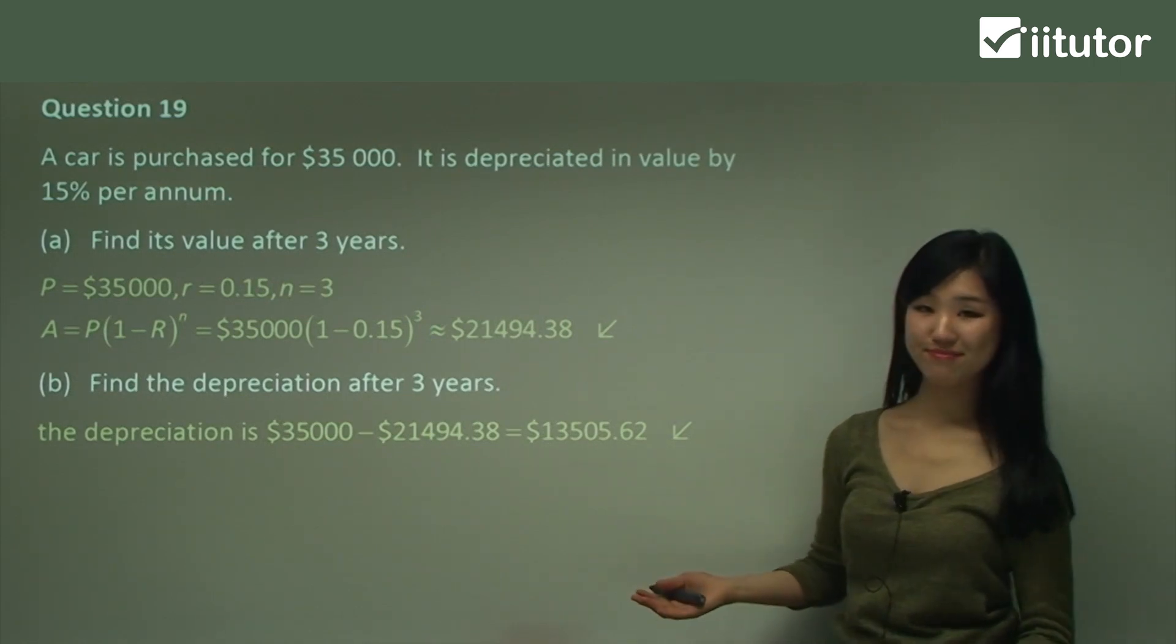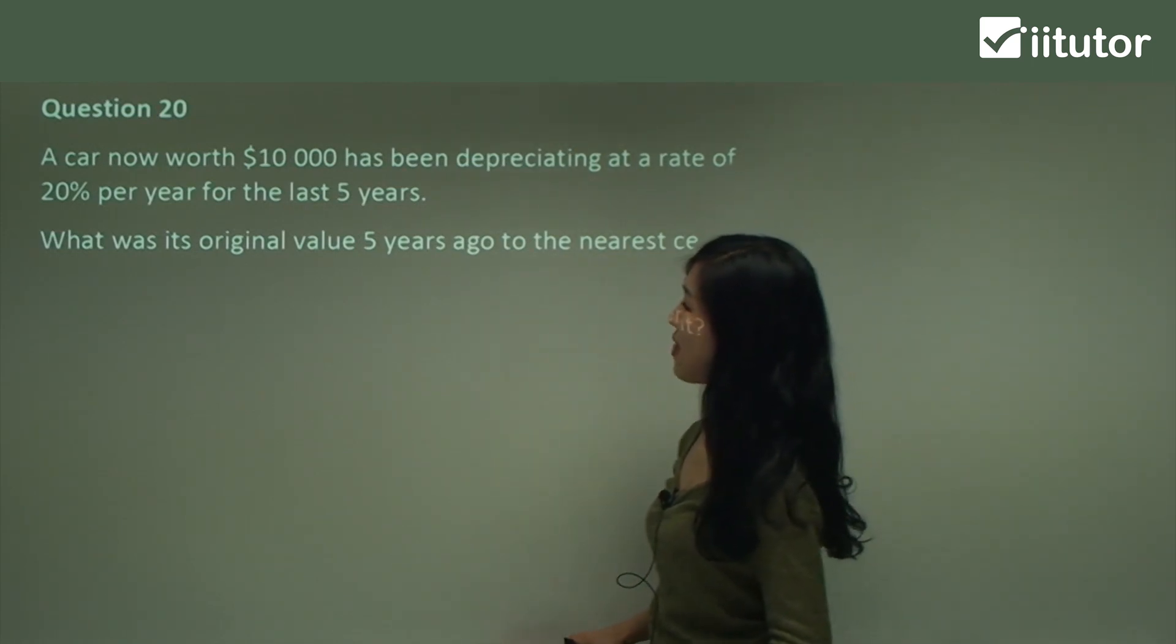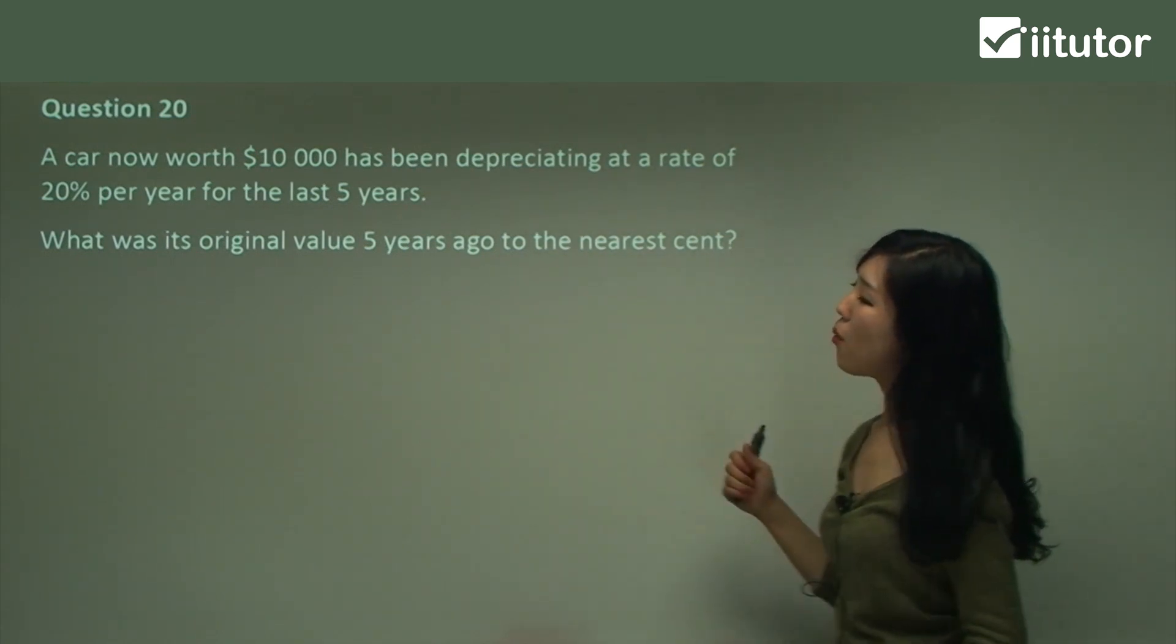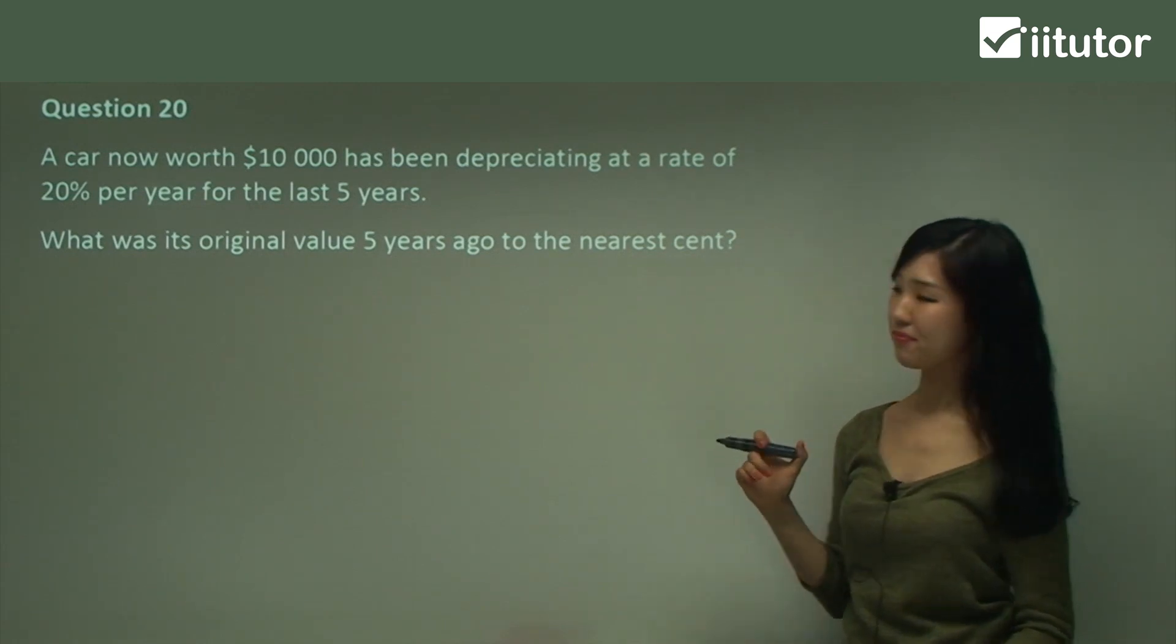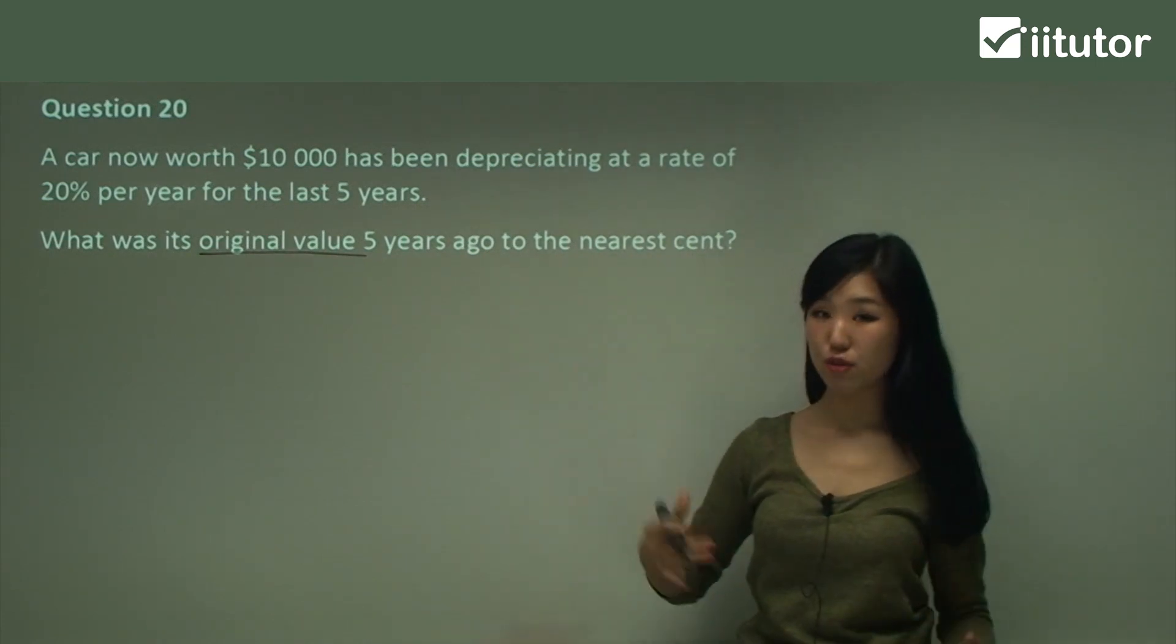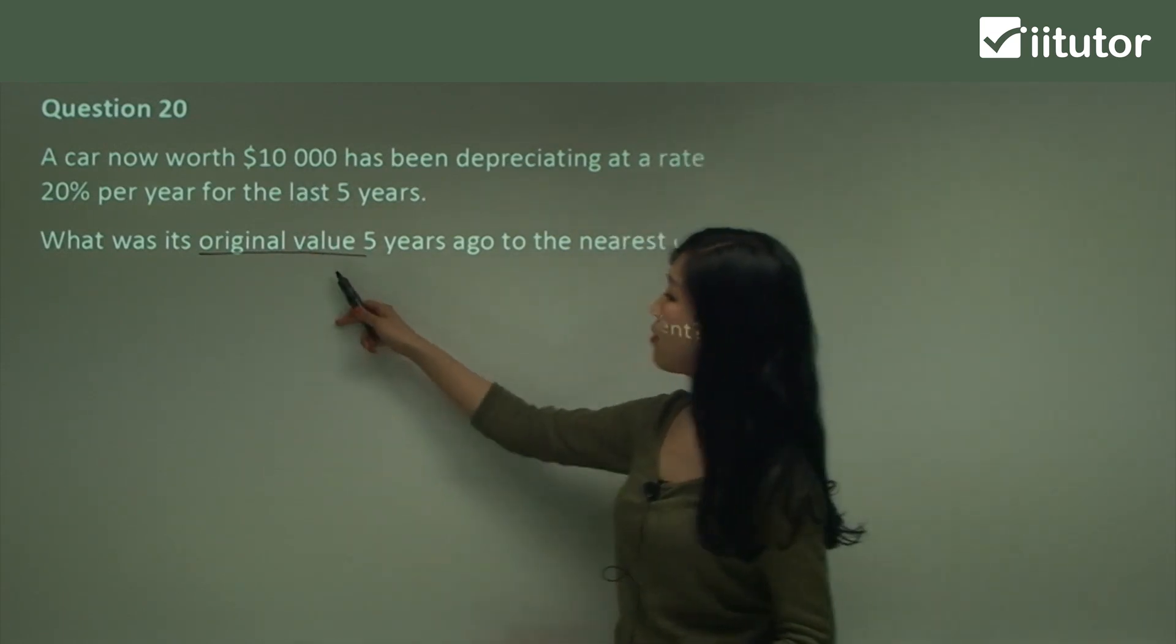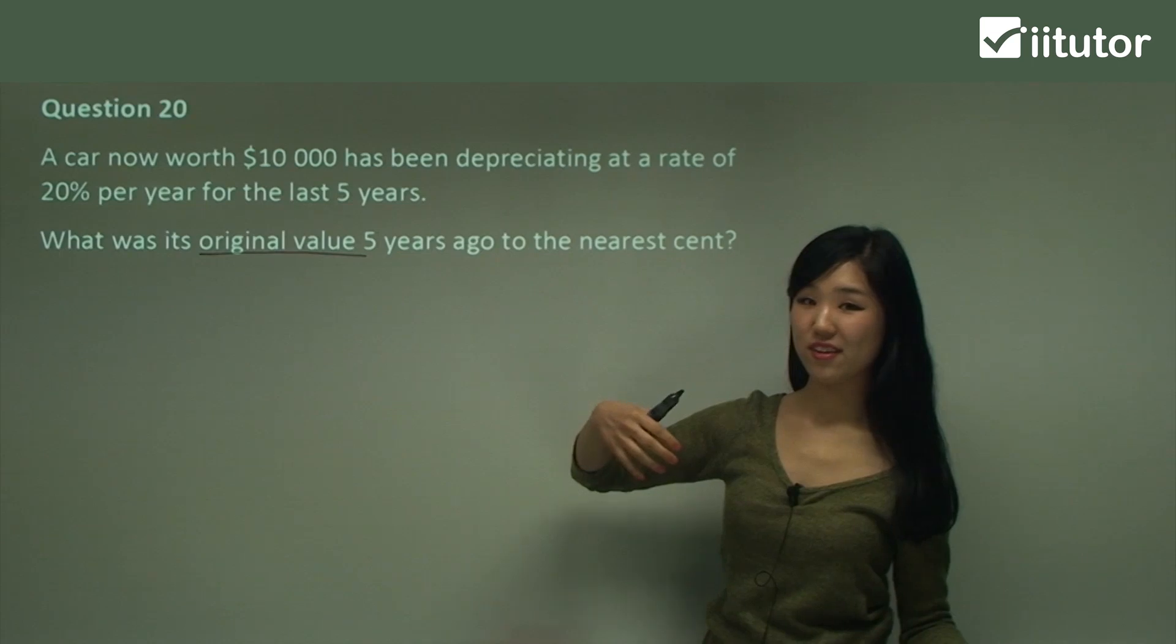Question 20 says, a car now worth $10,000 has been depreciating at a rate of 20% per year for the last five years. What was its original value five years ago to the nearest cent? This is a little bit different because it's asking us for the original value, which is the initial value, not the future value. We want to find the value that it was five years ago, so the initial value.